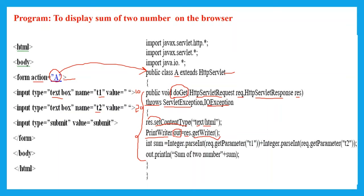To read the value passed by the client, we use the getParameter method. The getParameter method reads the input parameter passed by the client and takes one argument — the name of the input field. The name of the first input field is T1. Whatever value is assigned to T1 — here, 10 — will be retrieved. The getParameter method belongs to the request interface, and its return value is in String form.